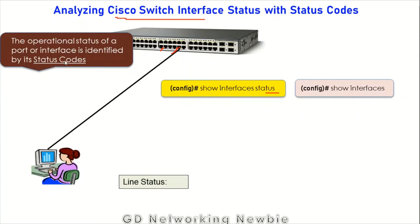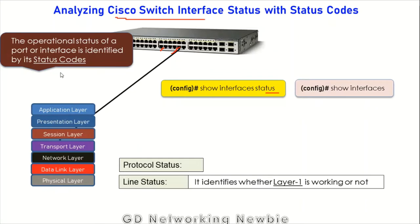These codes are known as line status and protocol status. They give us the status of the line as well as the protocol of that interface. In the line status, they identify whether Layer 1 is working or not. In data communications and networking, every layer should work properly for communication. If the command gives information about the line status, that information will guide us that there is a problem with Layer 1, meaning the physical layer is not working.